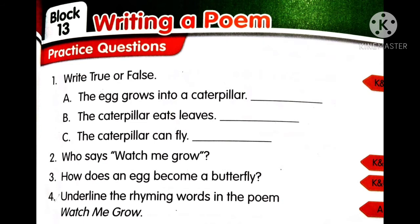If you see the first one, write true or false. So if the sentences are from the lesson and they are telling the same as what is there, you can write true; if not, write false. For example: 'The egg grows into a caterpillar' — if it is there in the lesson, keep true, otherwise write false.